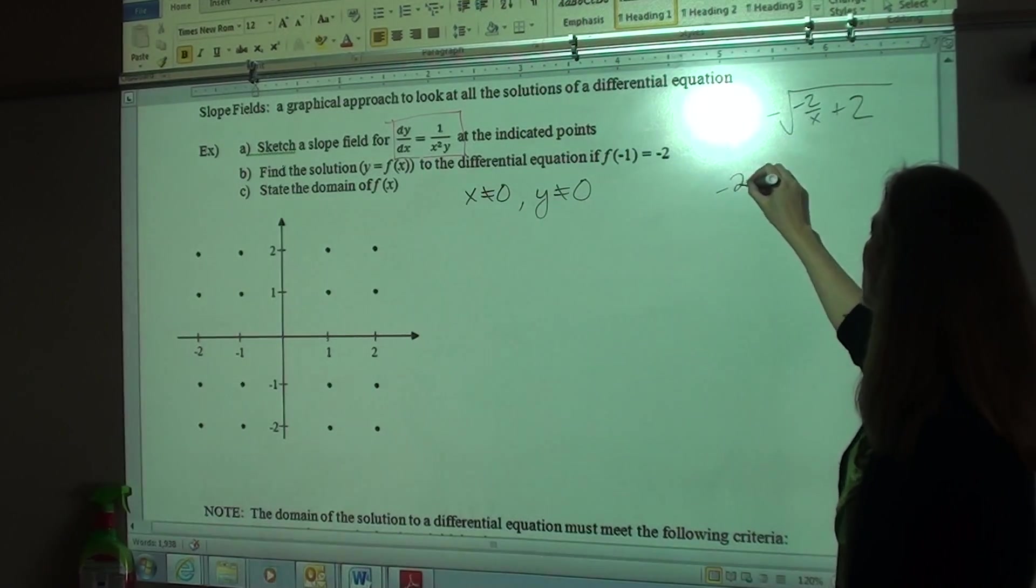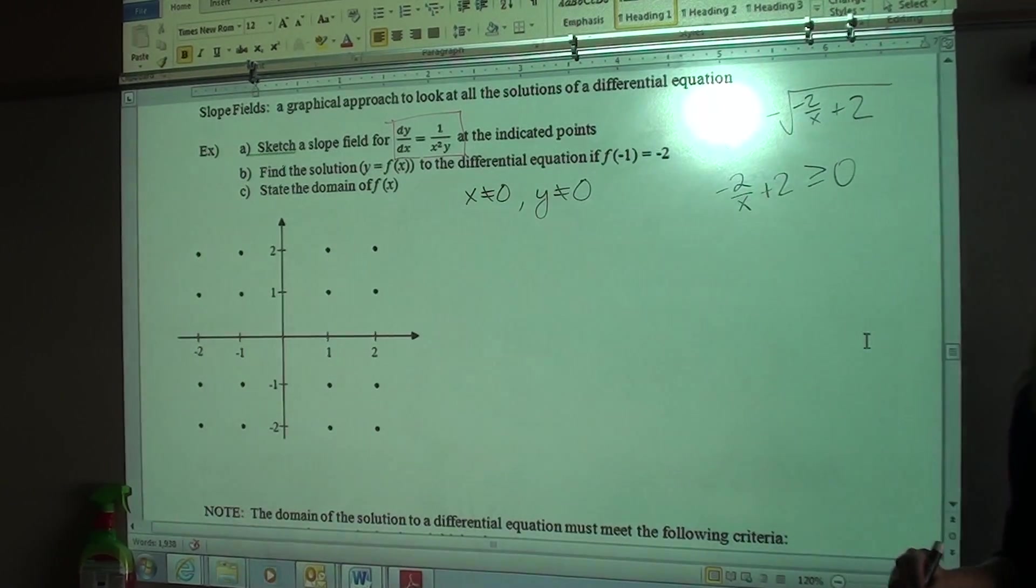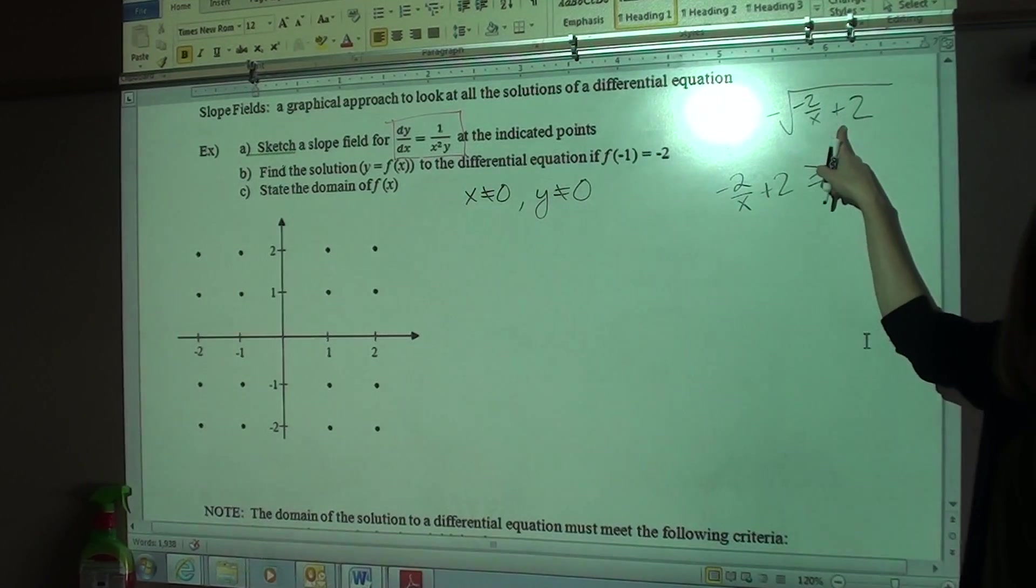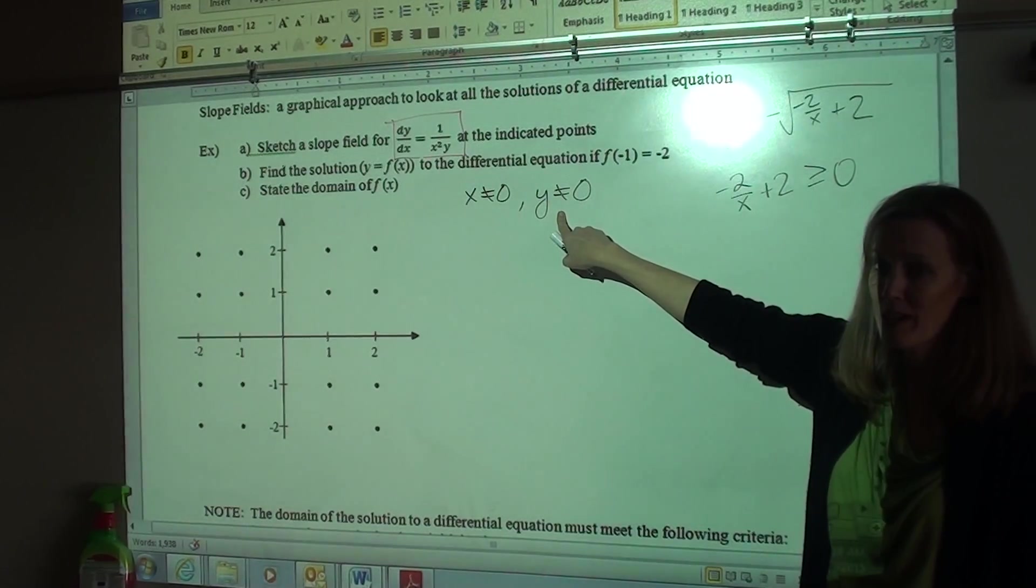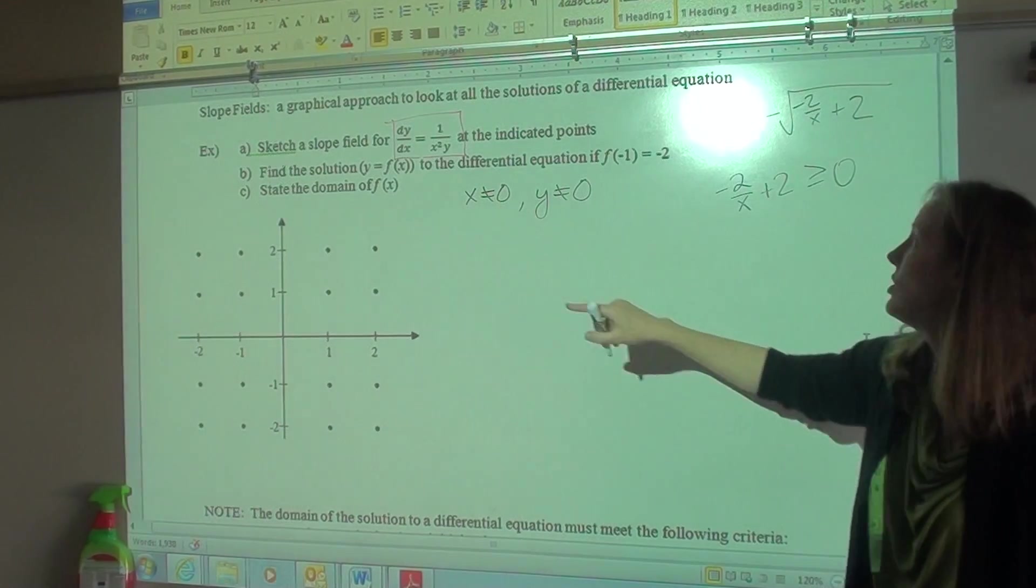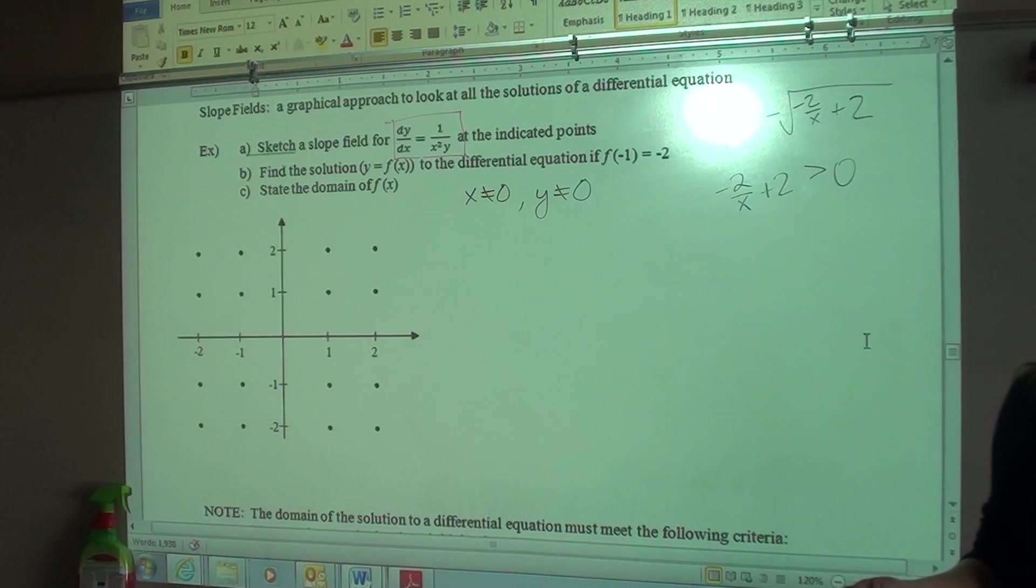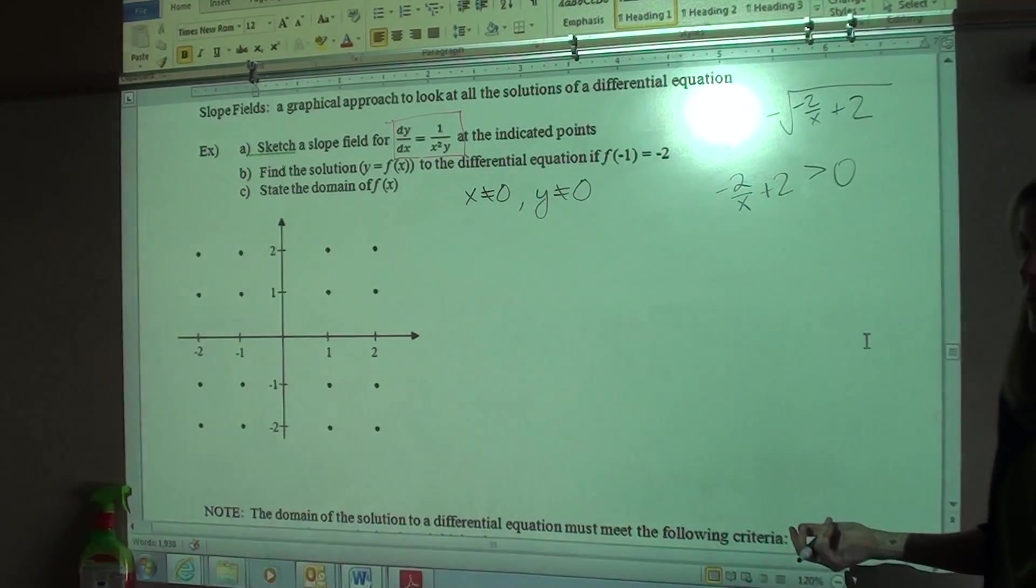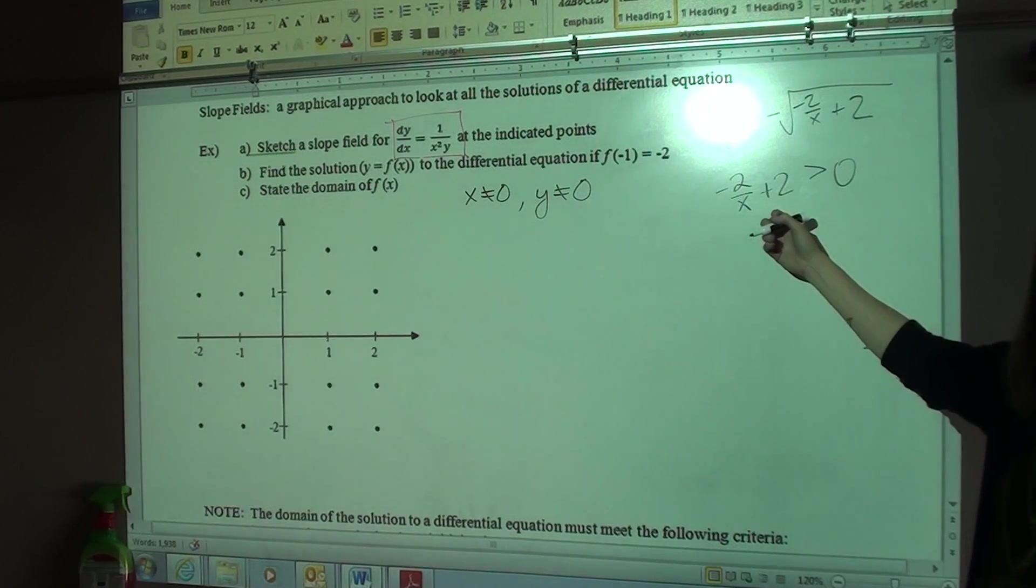So what we get is negative 2 over X plus 2 has to be greater than or equal to zero. However, this is Y, right? So can it equal zero? No. No. Why not? Because Y can't be zero, right? Okay. So we have to be greater than. Because if we were equal to, Y would be zero. Do you understand that? Yes? No? Yes. Okay, good. We're solving a rational inequality.